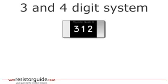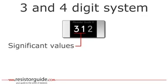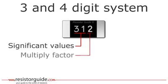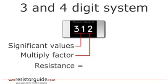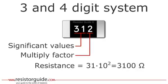Let's take an example of a three digit code. The first two digits represent the significant values of the resistance. The third digit represents a power of 10 multiply factor. The resistance value is therefore 31 times 10 to the power of 2, which leads to 3100 ohms.